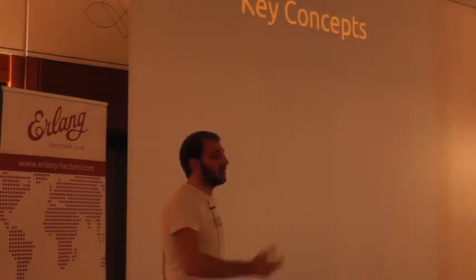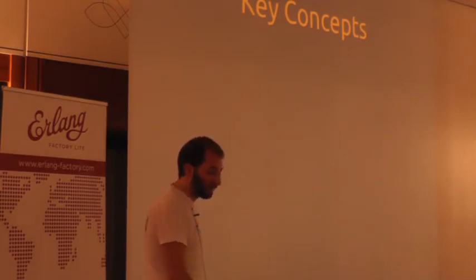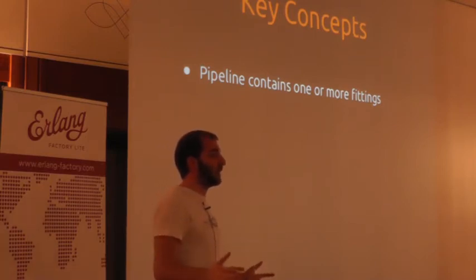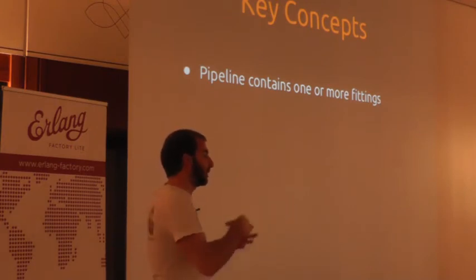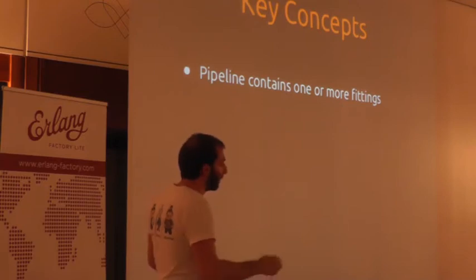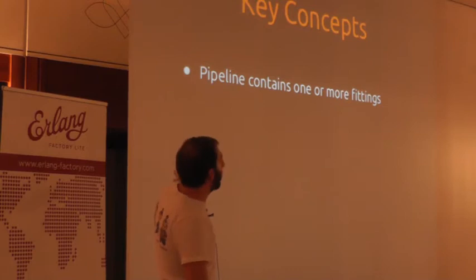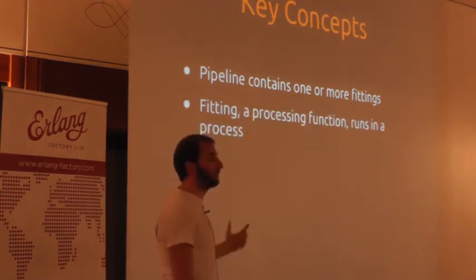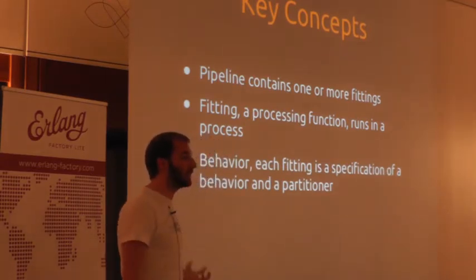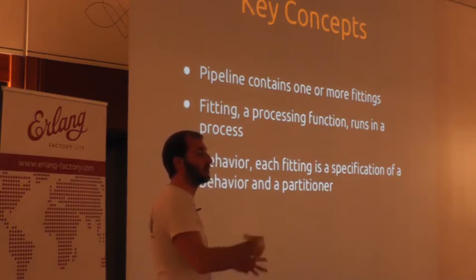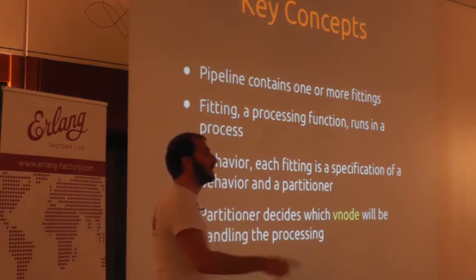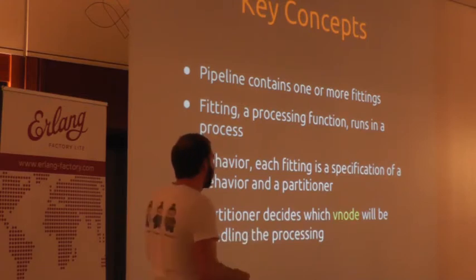Now that we've covered React Core and what a Dynamo system is, let's talk about React Pipe. The key concepts are as follows. The terminology is a bit interesting — because it was based around pipelining, you have pipes and fittings. You have a pipeline that contains fittings. These fittings are Erlang functions that run inside a worker process. Each fitting has to follow a particular behavior, and React Pipe makes certain behaviors available to allow you to do typical data processing work. The partitioner decides which V node will handle the processing work that fitting performs.